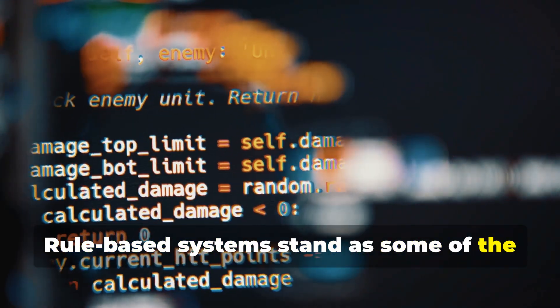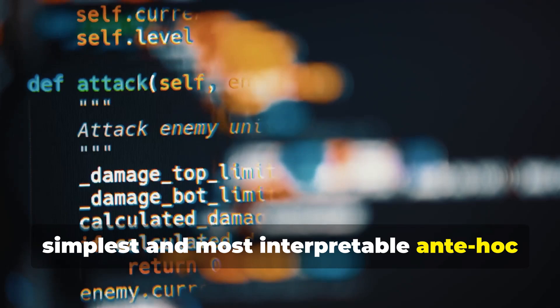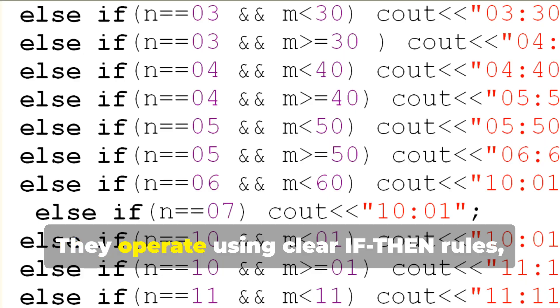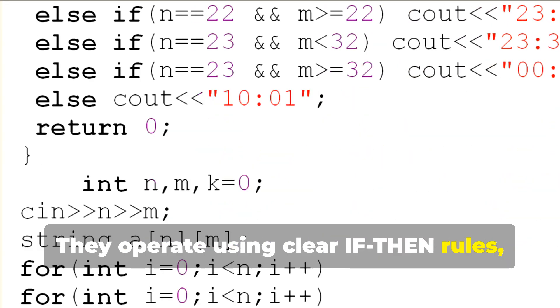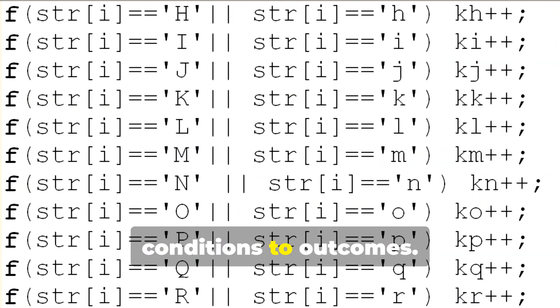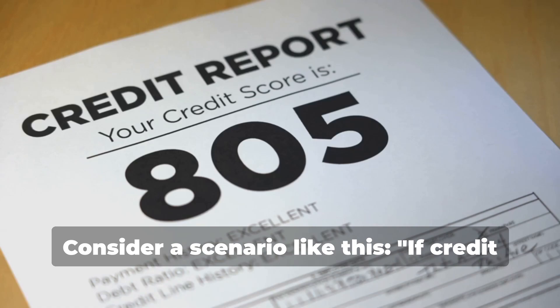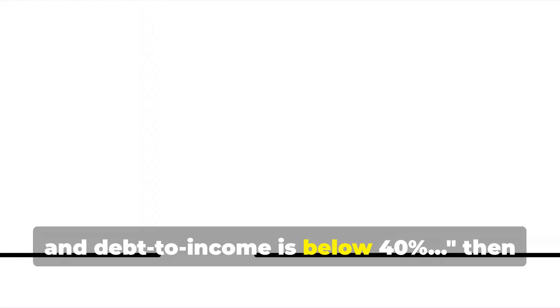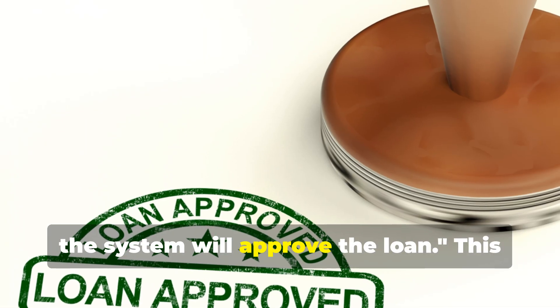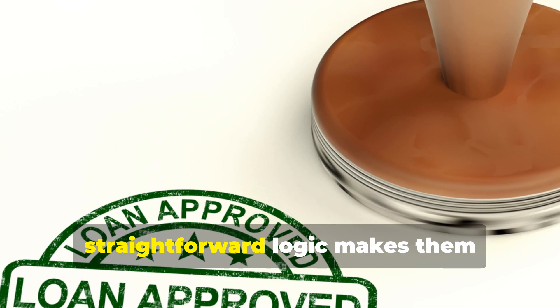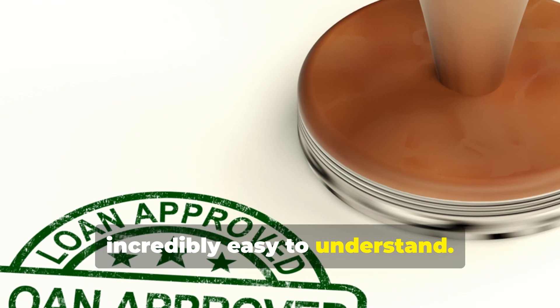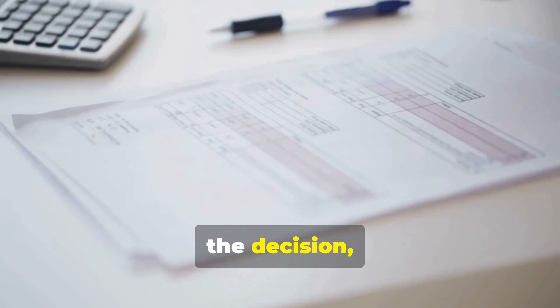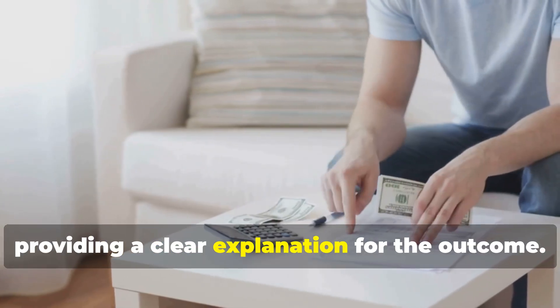Rule-based systems stand as some of the simplest and most interpretable ante-hoc models in the world of AI. They offer a clear and direct approach to decision-making. They operate using clear if-then rules, establishing a logical pathway from conditions to outcomes. Consider a scenario like this: If credit score is above 700 and debt-to-income is below 40%, then the system will approve the loan. This straightforward logic makes them incredibly easy to understand. The logic is transparent. You can simply point to the specific rule that triggered the decision, providing a clear explanation for the outcome.